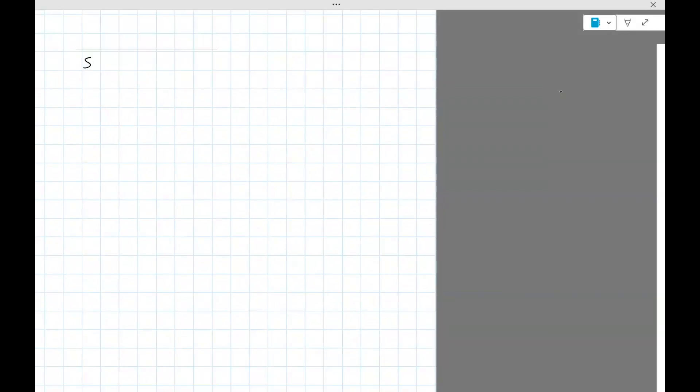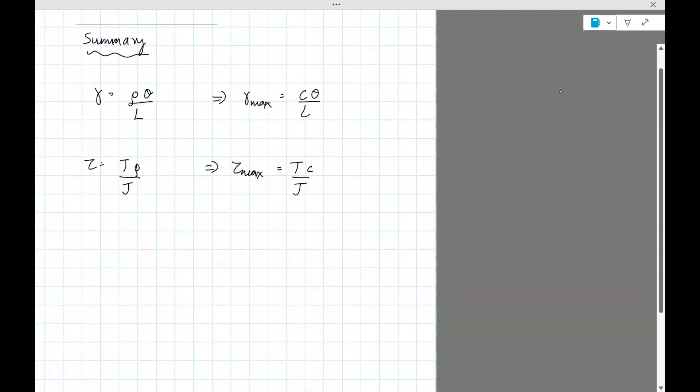So this is the summary. We have all the formulas in one place. So what we have so far is, gamma or shear strain is rho theta divided by L. From this, if you want the maximum strain, it's simply you replace rho with C. And so you have C theta divided by L. The shear stress is T rho divided by J. If you want the maximum, just go T C divided by, so this should be J. And then finally, if you want the angle of twist, it's T L divided by J times bulk modulus. So this is a summary of everything you need in order to solve problems.